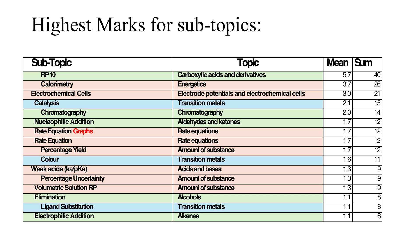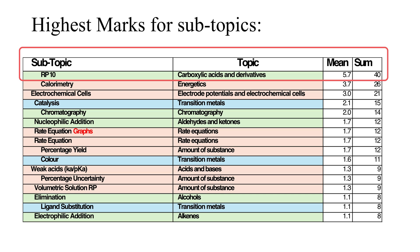Looking in greater depth at which subtopics are worth the most marks across the seven papers, required practical 10 comes firmly in first position with a total of 40 marks — an average of six marks out of 60 per paper. Calorimetry is a distant second at 3.7 marks per paper. Electrochemical cells comes in third with three marks per paper, 21 marks across the seven papers. There are other higher-value subtopics, but those top three are the clear priority.